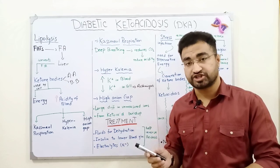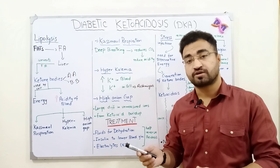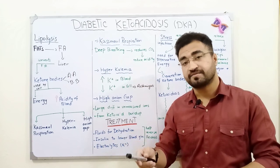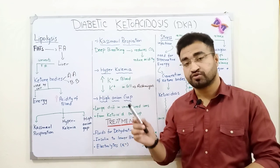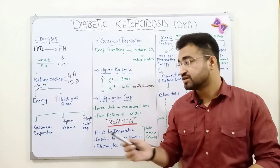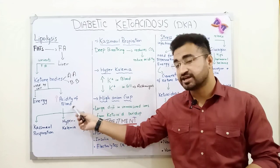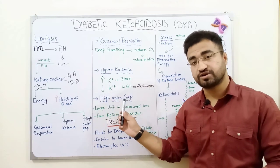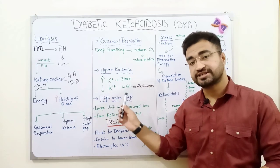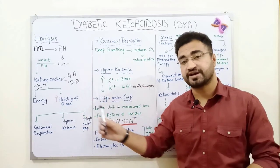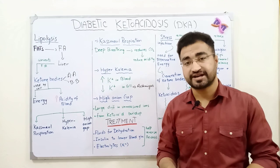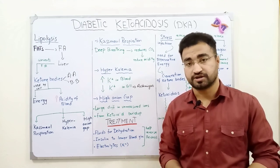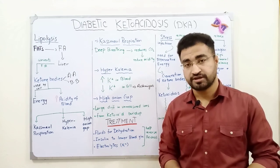So potassium that normally should remain inside the cells starts moving out into the bloodstream, because H+ ions — which are in excess in the blood — enter cells via an exchanger system, and through the same system potassium exits the cells. This results in elevated potassium levels in the bloodstream.